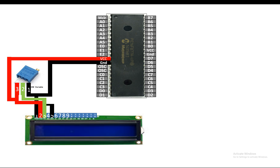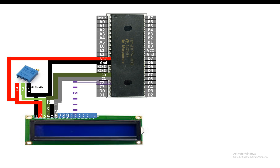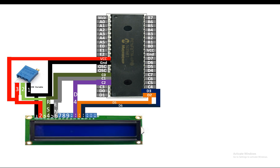Pin number four is the RS pin — I'm going to use pin C0 of the PIC. For pin number six, the enable pin, I'm going to use C1. For data pin 4 of the LCD (pin 11), I'm going to use C2. For data pin 5 (pin 12), I'm going to use D2. For data pin 6 (pin 13), I'm going to use pin D3 of the PIC. For data pin 7 (pin 14), I'm going to use C4, which is pin 23 of the PIC.